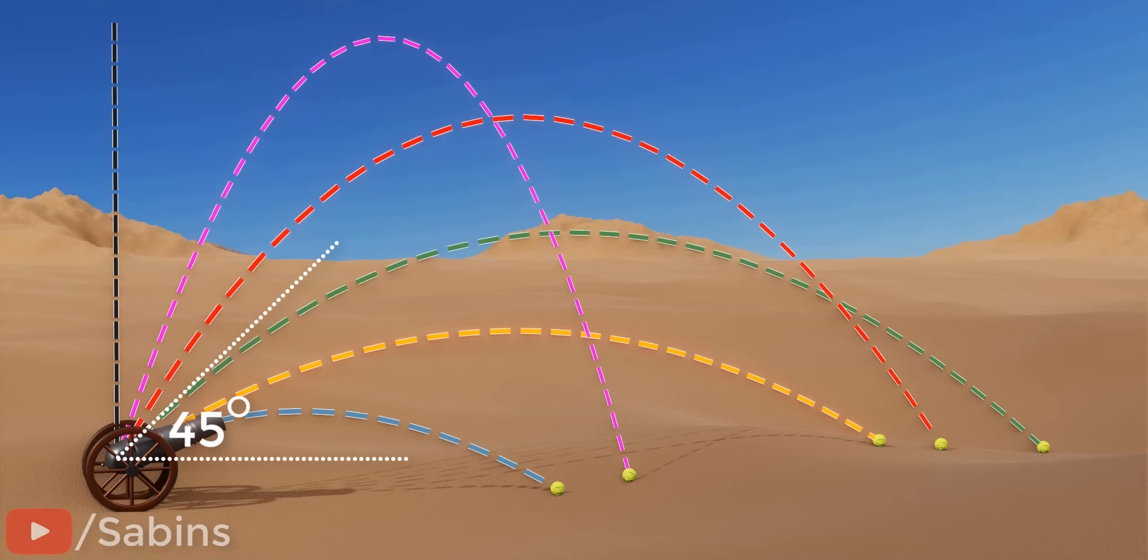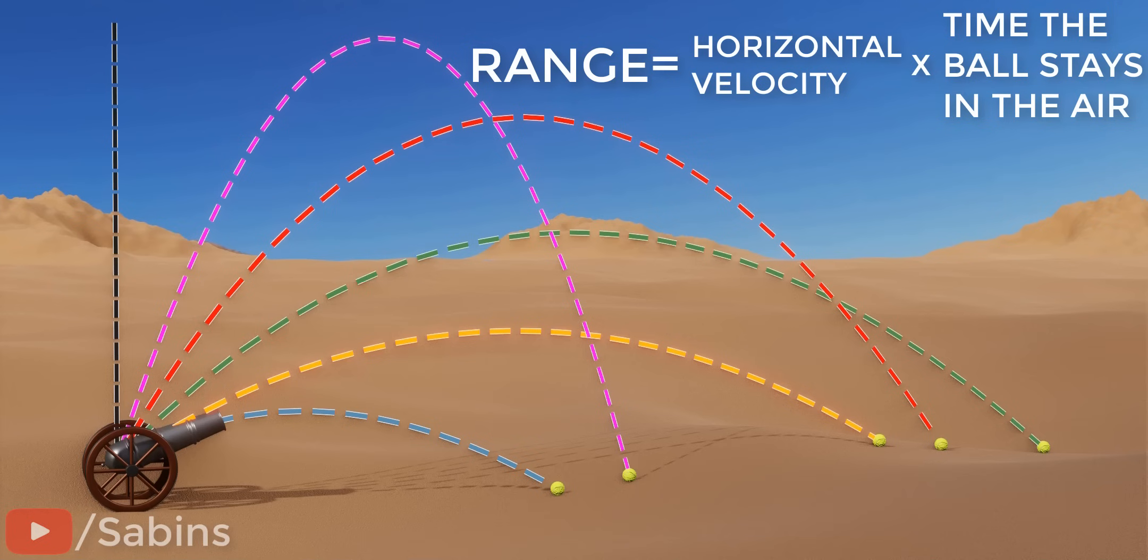The range of the ball is multiplication of the initial horizontal velocity you have given multiplied by the time duration it stays in the air.